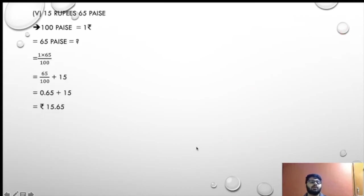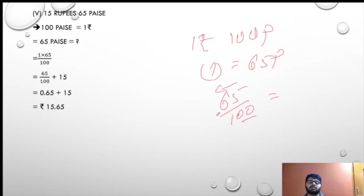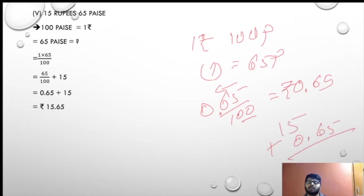Moving to the next sum: 15 rupees and 65 paise. 1 rupee equals 100 paise, so 65 paise equals 65 upon 100. Two decimals on the left: 0.65 rupees. Adding to 15: 15 plus 0.65 equals 15.65 rupees.